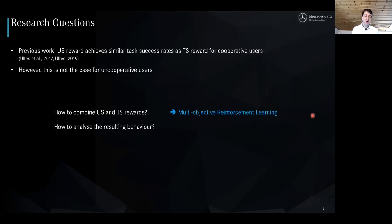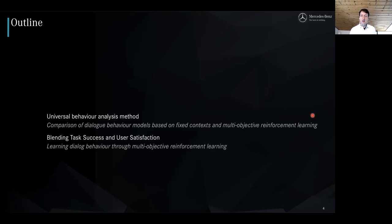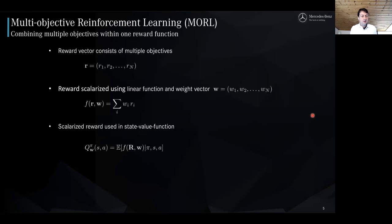For the first question, we apply multi-objective reinforcement learning. To answer the second question, we propose a new universal behavior analysis method that also builds upon multi-objective reinforcement learning. In contrast to single-objective reinforcement learning where we only have one scalar reward, in multi-objective reinforcement learning we have multiple rewards represented as a vector of rewards r. To use this vector with the RL algorithms we know, we need to scalarize this vector to get one final reward value, so a scalarization function is required. In this case it is a linear sum, which relies on a weight vector to weight the different reward components. This scalarized reward is then used in the state value function within the expectation for the reward component.